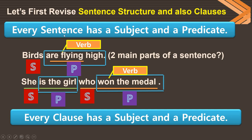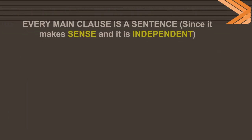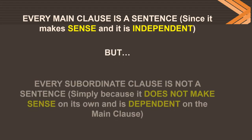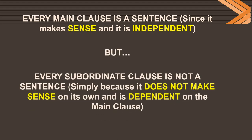Every sentence has a subject and predicate, and every clause has a subject and predicate. So what does it mean? That means every sentence is definitely a clause. However, the question to be asked is: is every clause a sentence? Every main clause is a sentence since it makes sense, is independent, and can stand on its own. But every subordinate clause is not a sentence, because though it has a subject and predicate, it does not make sense on its own and is dependent on the main clause. So every sentence is a clause, but every clause need not be a sentence, because a sentence should necessarily make complete sense.